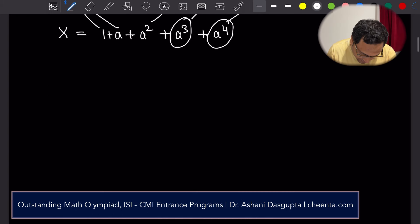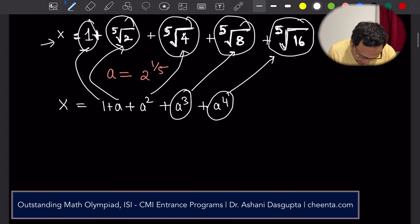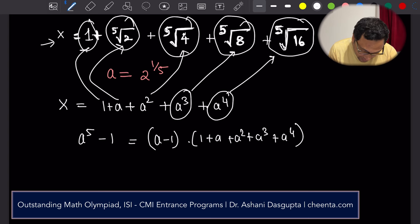So let's try that. A to the power 5 minus 1 is equal to a minus 1 times 1 plus a plus a squared plus a cubed plus a to the power 4. Remember, a is this. In this particular expression, a is 2 to the power 1 by 5. So,